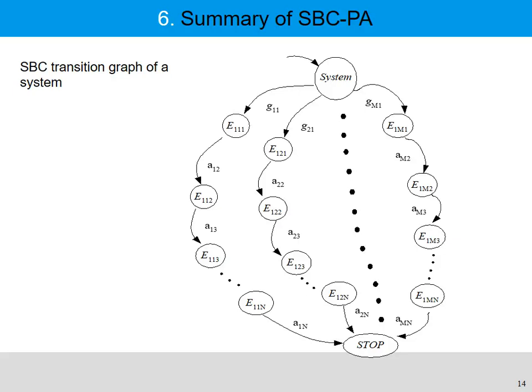We use the SBC transition graph to describe a system. It is the only one diagram that represents the semantics of a system. The initial state is the system itself. From the system, you can go to state E1.1.1 with the transition G1.1 interaction, then from E1.1.1 to state E1.1.2 with transition interaction A1.2, and so on. We have many IFDs represented in this transition graph.